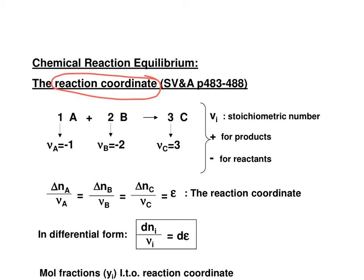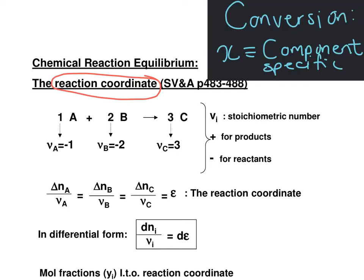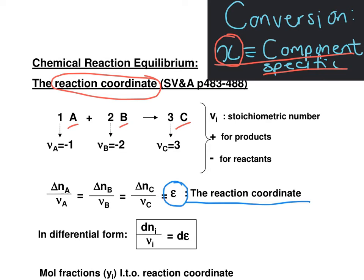Before we can quantify a system at chemical reaction equilibrium, we first need to define a way to describe the extent of that chemical reaction. Conversion is often used to express the extent of the reaction. However, conversion is a component-specific quantity and depends on how much of that specific component you had in your system at the beginning of the reaction. You will get a different answer whether you consider the conversion of A, B, or C. The rule of thumb is to specify the conversion of the limiting reagent. We are going to express the extent of the reaction using a variable called the reaction coordinate, for which we use the symbol epsilon — a quantity that is exactly the same for each component in the reacting system.